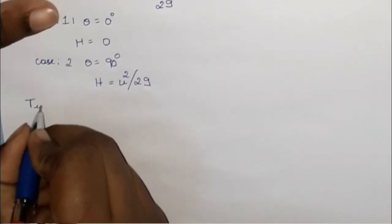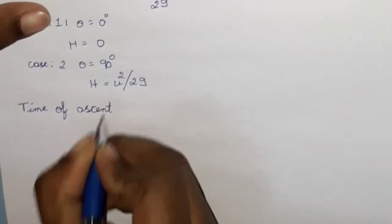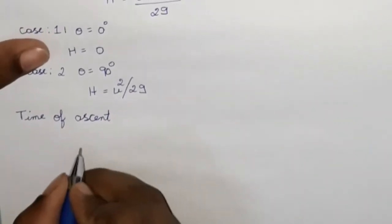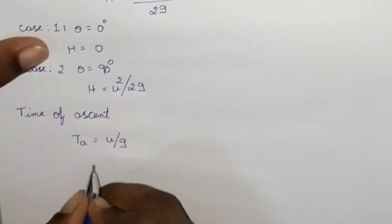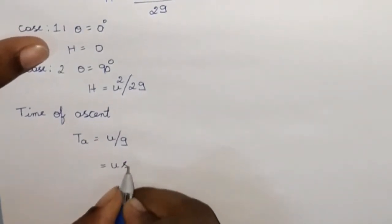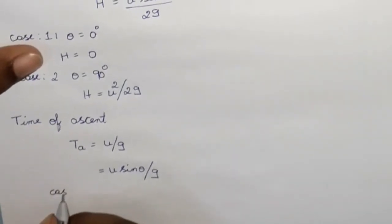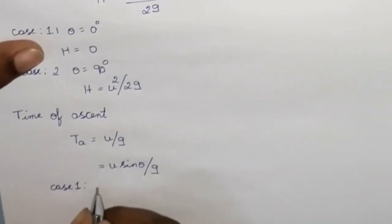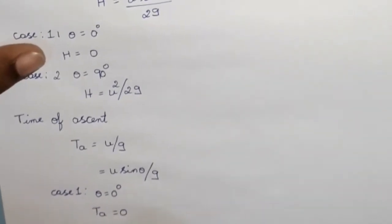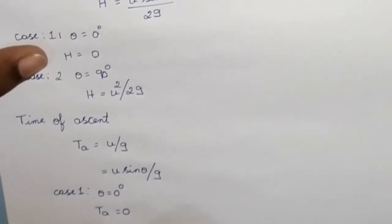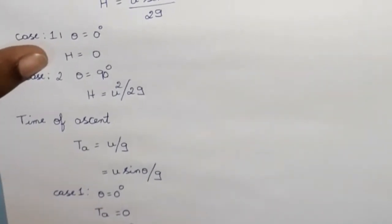When θ equals 90°, maximum height equals u²/2g. For time of ascent: from previous classes, time of ascent tₐ equals u/g for vertical projection. For oblique projection, the same equation becomes tₐ equals u·sinθ/g. Case 1: when θ equals 0, t equals 0. Case 2: when θ equals 90°, t equals u/g.